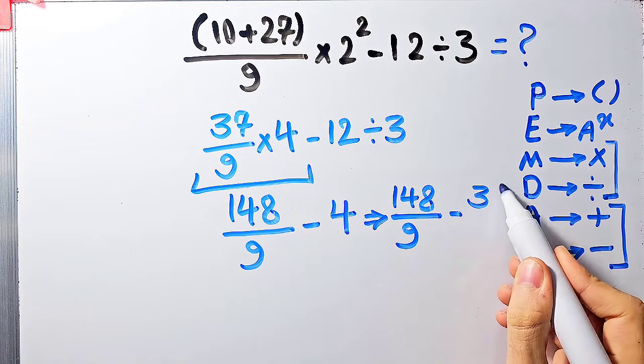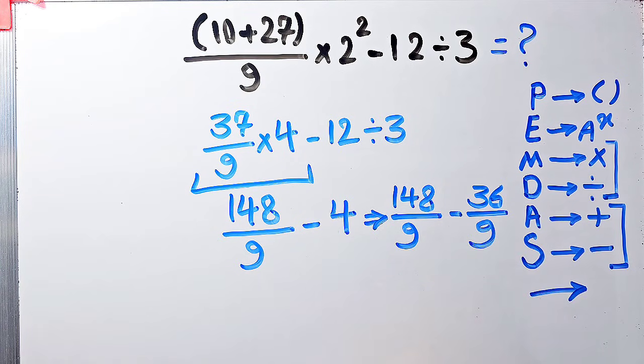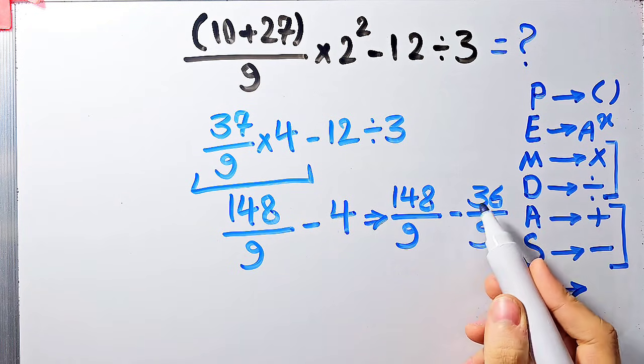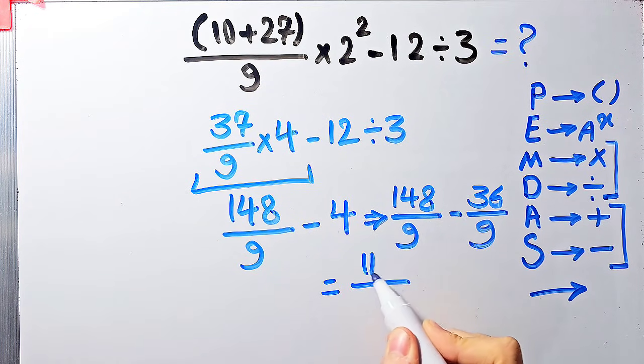148 minus 36 equals 112. The final answer of this question equals 112 over 9.